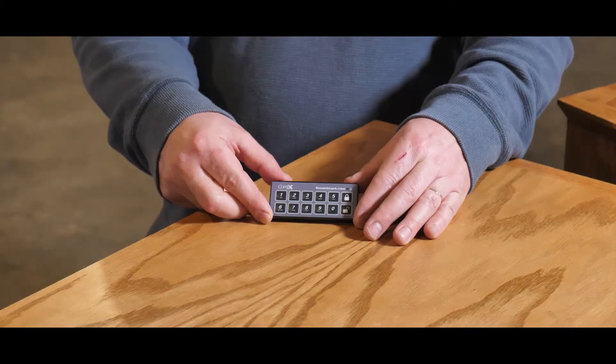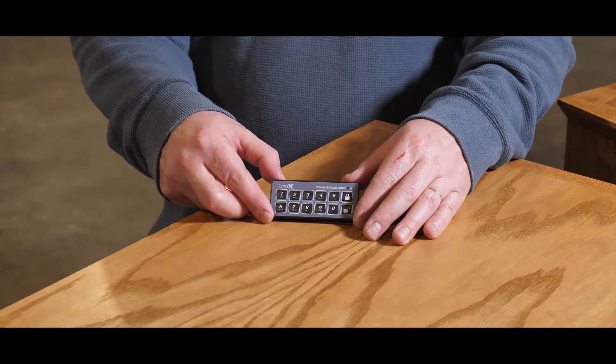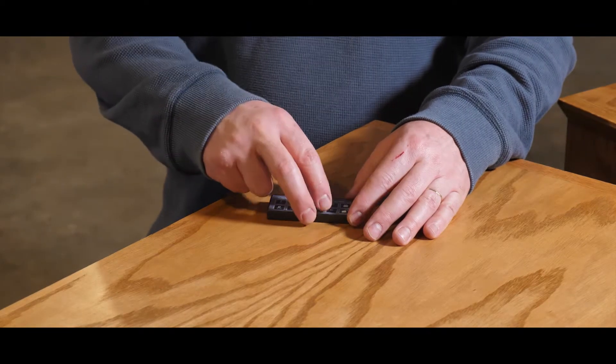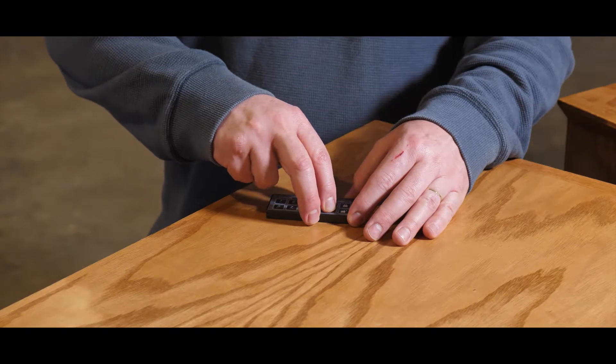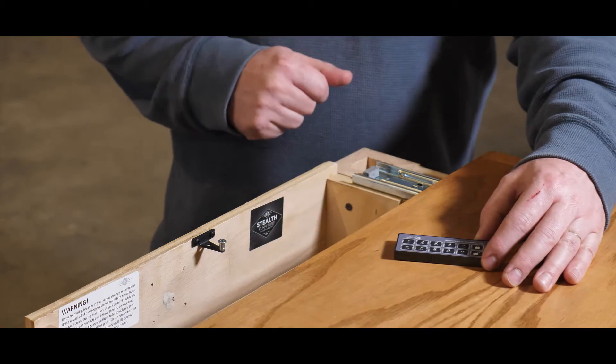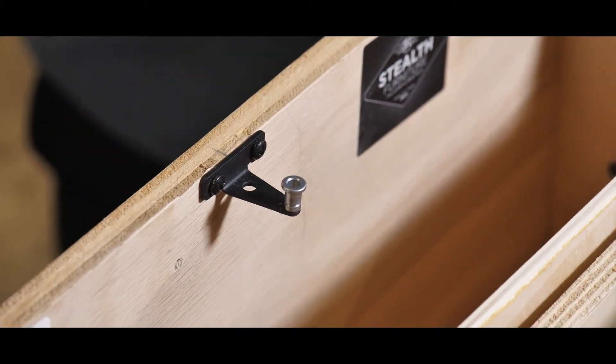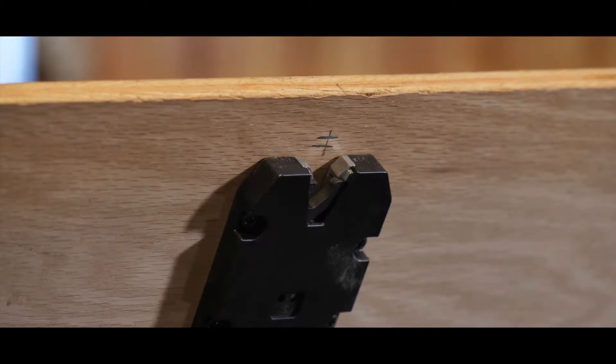If you prefer to have a passcode or a combination on your lock, we sell this wireless keypad option where you will put in your code. Unlock, wait for the click, and then this will open. You'll see that there is a catch here and underneath the lid there is a latch which will engage with that.